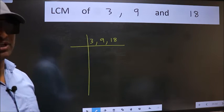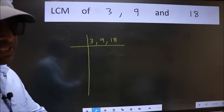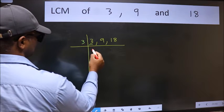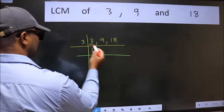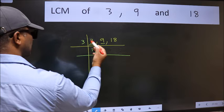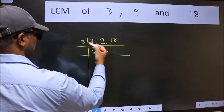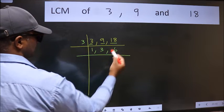Now we should focus on the first number which is 3. 3 is a prime number, so 3 into 3. The other number 9. When do we get 9 in the 3 table? 3 times 3 is 9. The other number 18. When do we get 18 in the 3 table? 3 times 6 is 18.